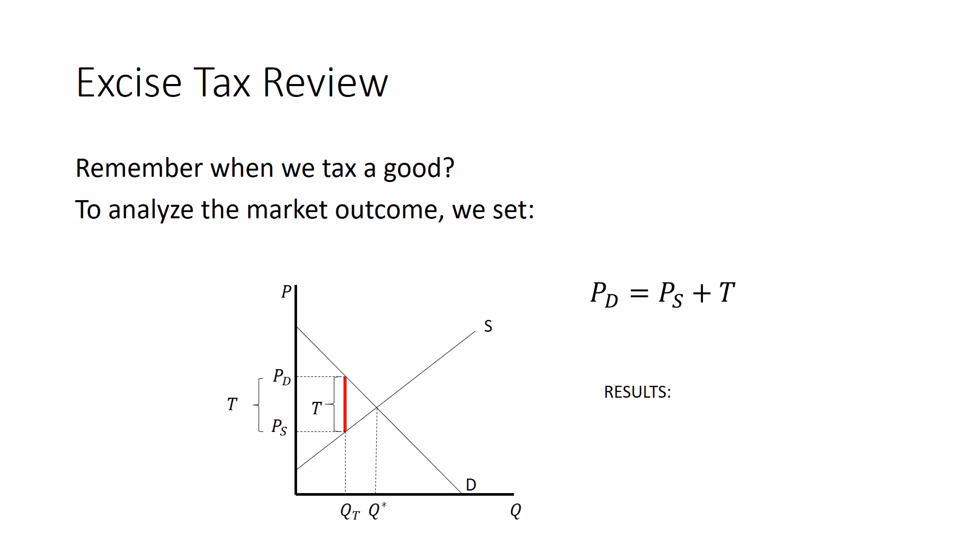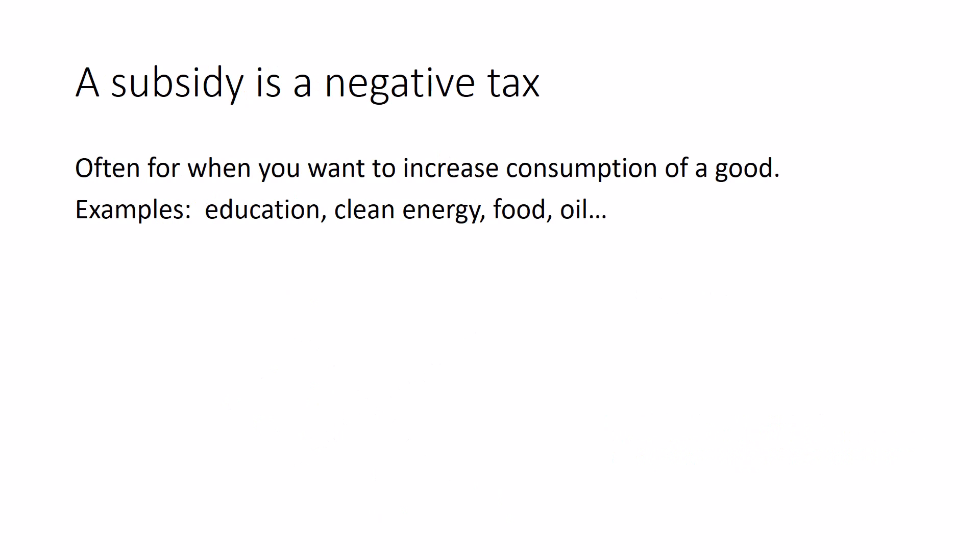We can remember some of the results from our previous videos. It's going to have lower consumer and producer surplus and an equilibrium. The government's going to collect T times QT dollars in tax revenue. And because QT is less than Q star, there's going to be a deadweight loss. This market is inefficient. I think we're ready to move forward now. So, the review's over.